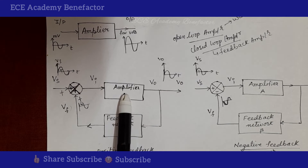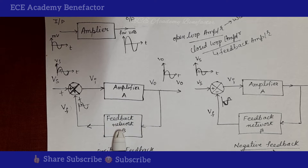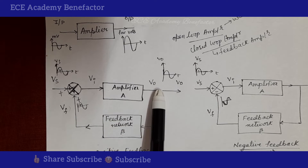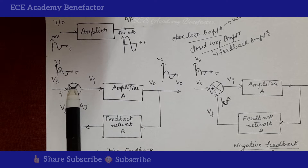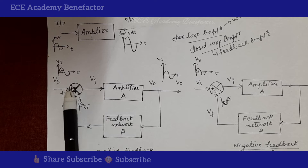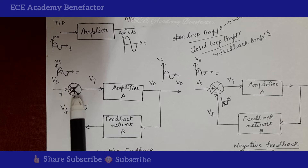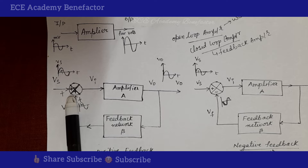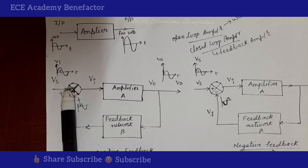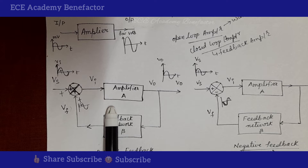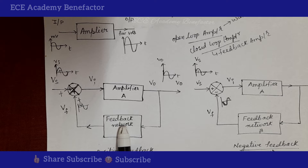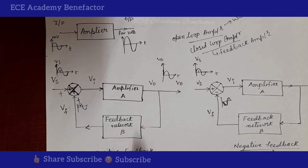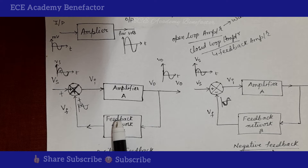What is feedback? We take an amplifier and one feedback network. This feedback network takes a part of the output voltage and gives it back to the input, where it is mixed in a mixer. The source signal and the feedback signal are mixed at the input side. A feedback amplifier is an amplifier with a feedback network. It is also known as a closed loop amplifier.